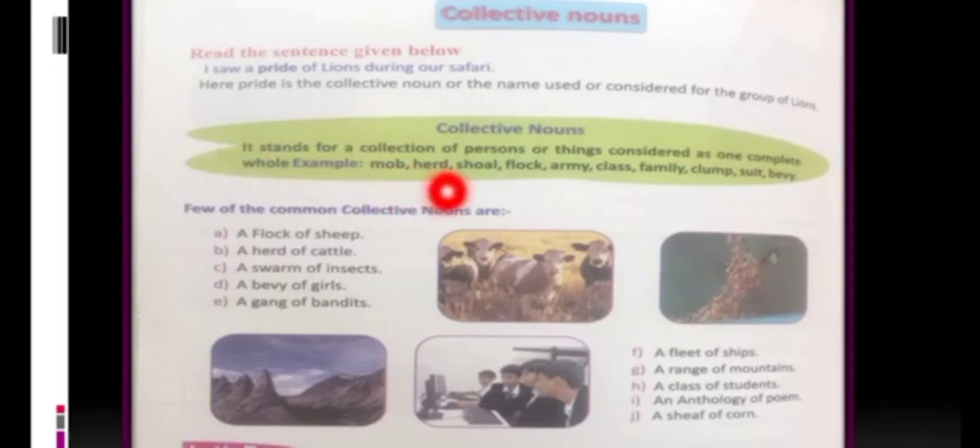Collective noun stands for a collection of persons or things considered as one complete whole. For example, mob, herd, shoal, flock, army, class, family, clump, suit, bevy.